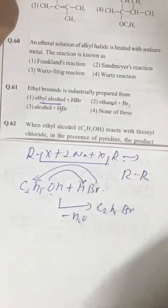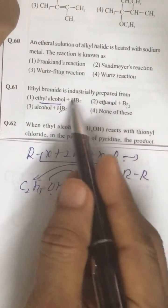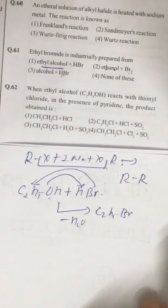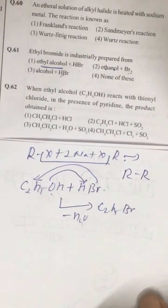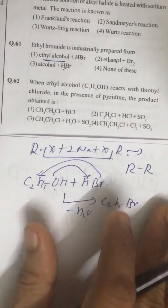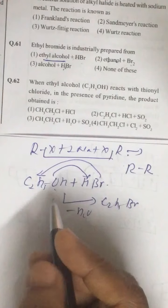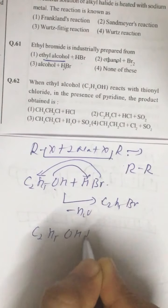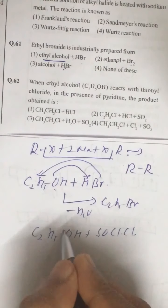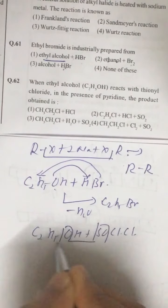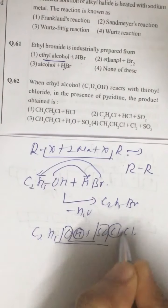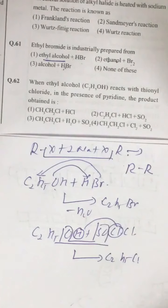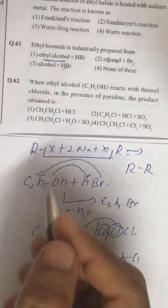Ethanol does not react with bromine so we are left with only first option. Question number 62. When ethyl alcohol reacts with thionyl chloride, C2H5OH plus SOCl2 thionyl chloride, this is the removal of SO2, removal of HCl and we get C2H5Cl. So the correct answer is second option.